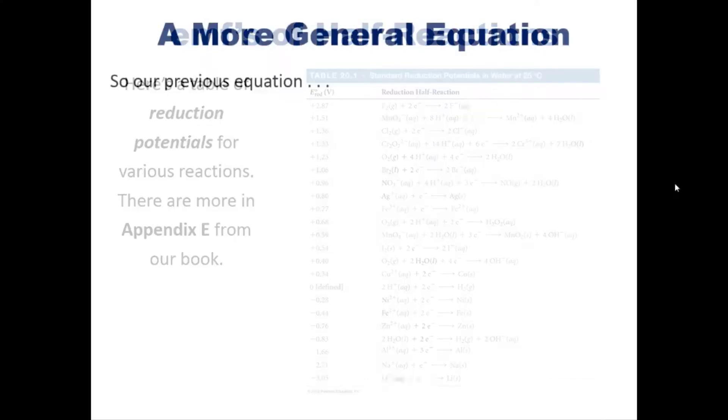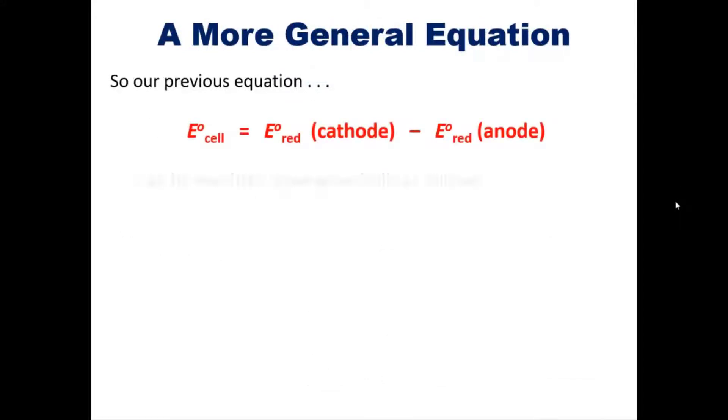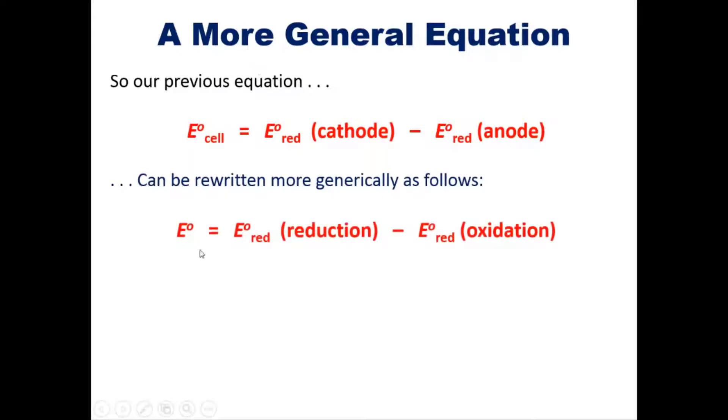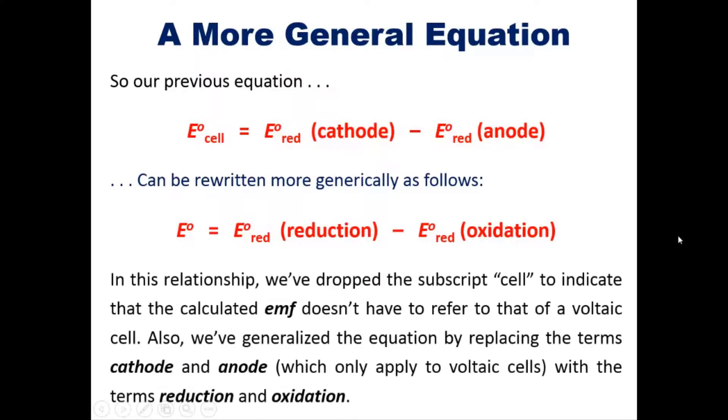Then our previous equation, the one shown here, can be rewritten more generically as this one. The overall reduction potential for any process is going to be equal to the potential of reduction minus that of oxidation. In this relationship, we've dropped off the subscript 'cell' to indicate that the calculated EMF doesn't have to refer to that of a voltaic cell. In other words, it could potentially apply to any redox reaction.